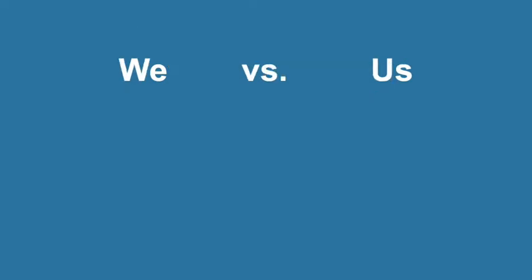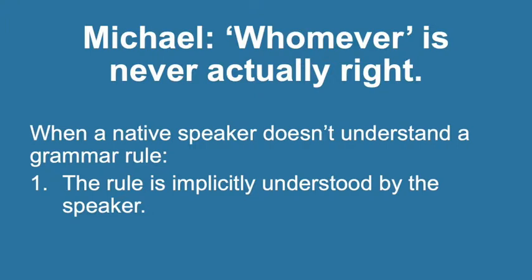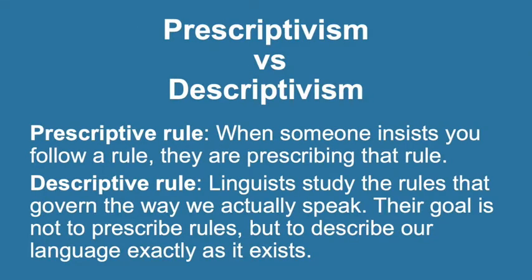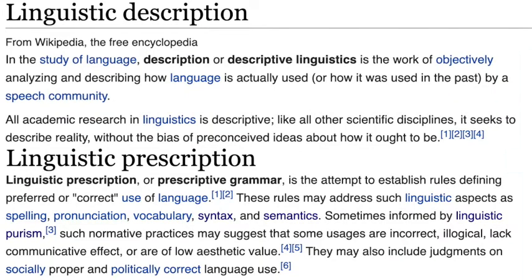For example, you know the difference between the words we and us, but it's doubtful that your parents ever taught you that we is the subject and us is the object. Maybe you can't explain this rule yourself, but you heard your parents using it as you were growing up, and now it just sounds right. The second reason a native speaker might not understand a rule in their language is that it's a prescriptive rule, not a descriptive rule. A prescriptive rule is a rule that grammar Nazis prescribe to us, even though it doesn't actually describe the way people speak. Linguists usually rely on studying descriptive rules, and we view prescriptive rules as, at best, useless from an empirical point of view, and at worst, harmful from a sociolinguistic point of view.